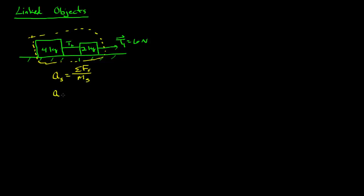So the acceleration of the system — well the only force acting on it in the horizontal direction, the up and down washes out, so we don't care — is going to be T1 divided by the mass of the system. The mass of the system is both of them, four plus two. So we get the acceleration of the system is six divided by six — that's convenient — so the acceleration of the system is one meter per second squared.